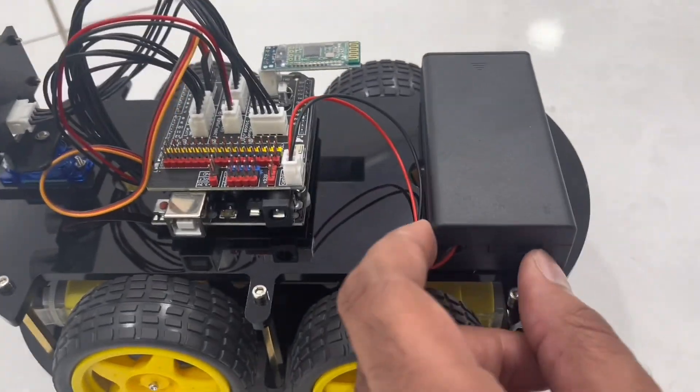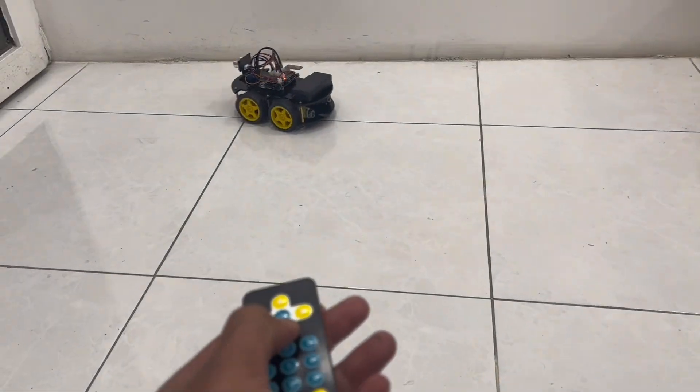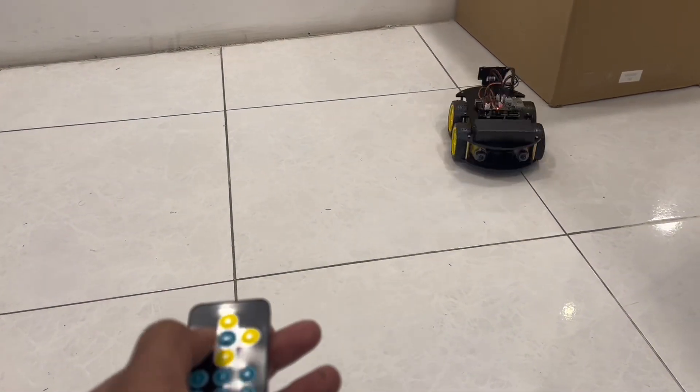Let's turn on this smart robot car and test all four modes. First we can control the movement of this car with the IR remote.